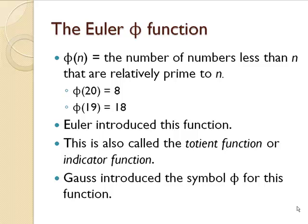Euler introduced this function. It is also called the totient function or the indicator function. Gauss is the one who introduced the symbol phi for this function. It is a function because for every input number there is only one output number.